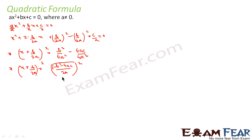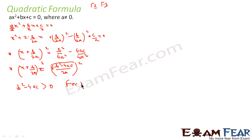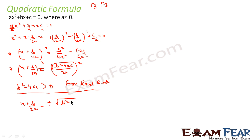Now since this has to be greater than 0, because this number is coming under a root — the root of some number, for a real number, must be greater than or equal to 0. We can't have the root of minus 2 as a real number; that would be an imaginary number, which we will study in class 11. For now, b² - 4ac must be greater than 0 for the root to be real. So if that condition is true, x + b/2a = ±√(b² - 4ac) / 2a.